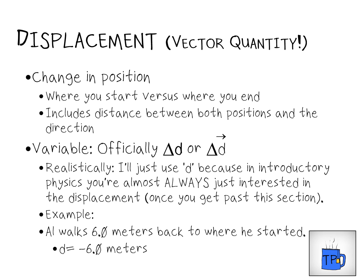Displacement is a change in position. If you're a little more math savvy, you'll recognize the delta symbol — this triangle — as meaning 'change.' So we're interested in the final position minus the initial position, and we should be able to follow that up with practice in a future video. For example, Al walks six meters back to where he started. He starts over here and goes back to where he started, so his displacement is negative six meters — it includes both the magnitude of the distance he traveled and the direction as well.